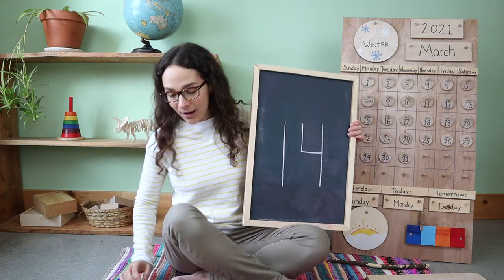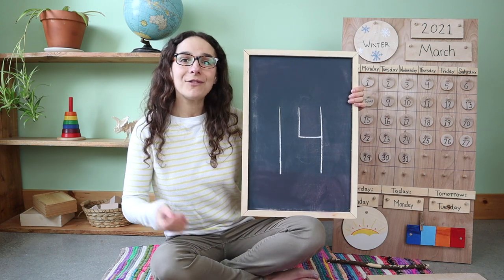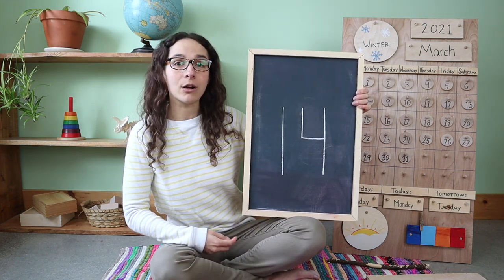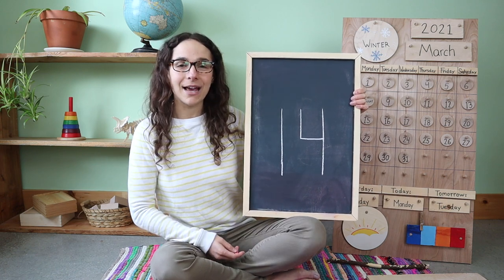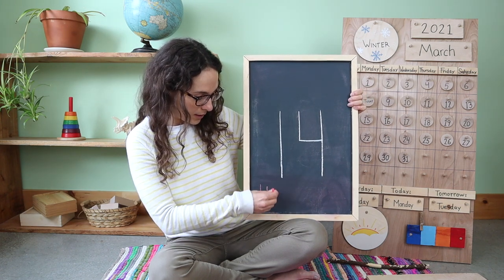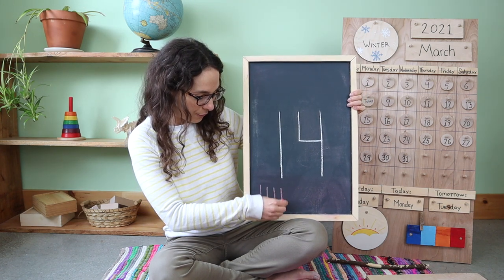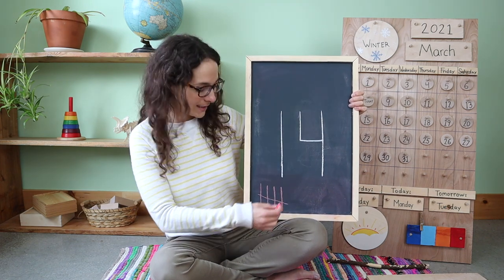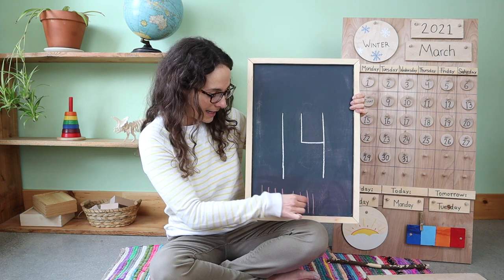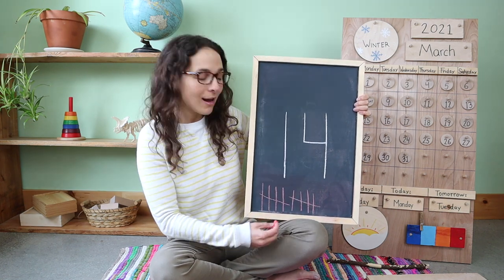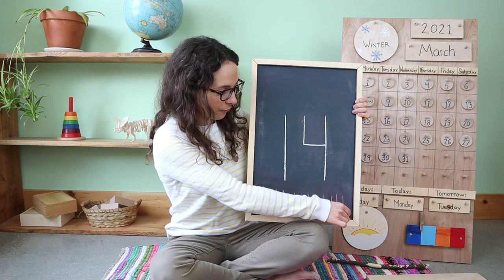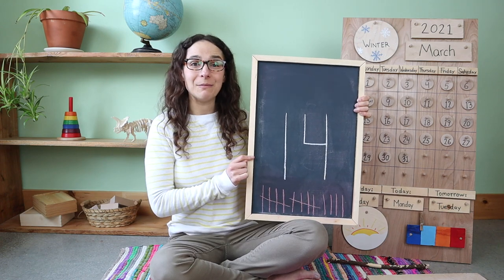Now we ran out of fingers to count, but instead we have tally marks. I'm going to draw 14 tally marks on the bottom of the chalkboard and we can count them together. Are you ready? 1, 2, 3, 4, 5 goes across, 6, 7, 8, 9, 10 goes across, 11, 12, 13, 14. Fourteen tally marks.